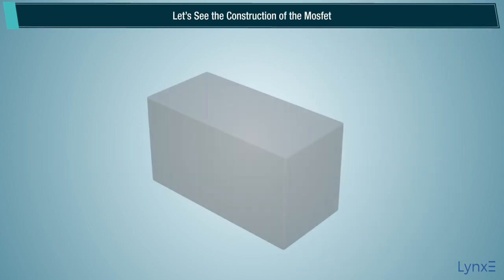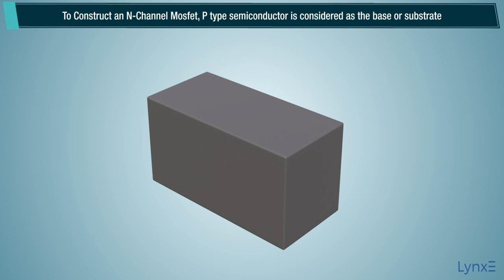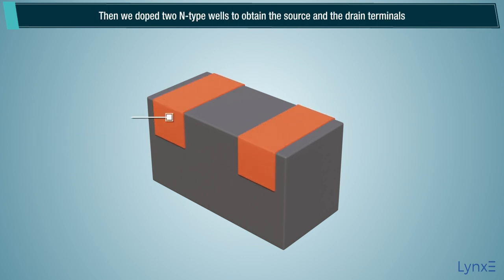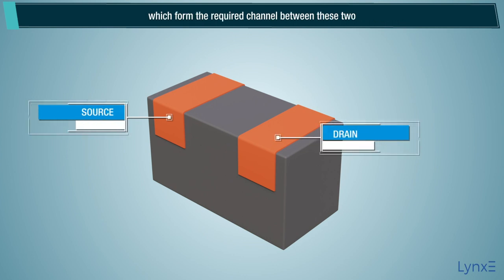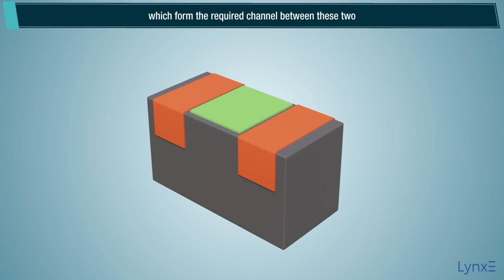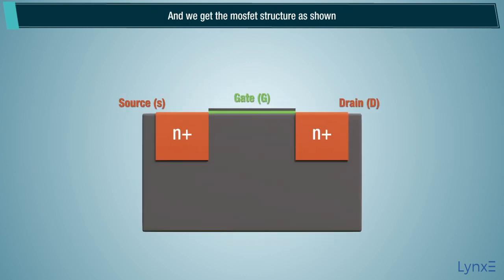Let's see the construction of the MOSFET. To construct an N-channel MOSFET, P-type semiconductor is considered as the base or substrate. Then we dope two N-type wells to obtain the source and the drain terminals, which form the required channel between these two. And we get the MOSFET structure as shown.